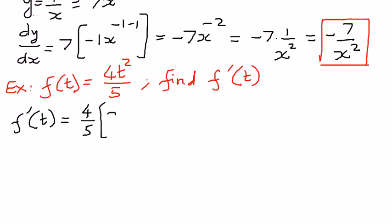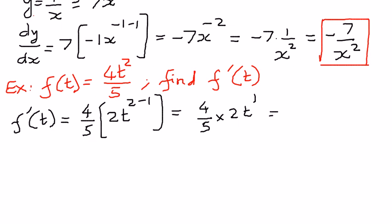We can write this as 4 over 5 times 2t to the power of 2 minus 1. When we simplify this, we get 4 over 5 times 2t to the power of 1. Since 2 minus 1 is 1, we can write this as 4 times 2 is 8, times t divided by 5. Since t to the power of 1 means the same as t — the power of 1 is implied in math — we just leave it as 8t over 5. This is our answer.